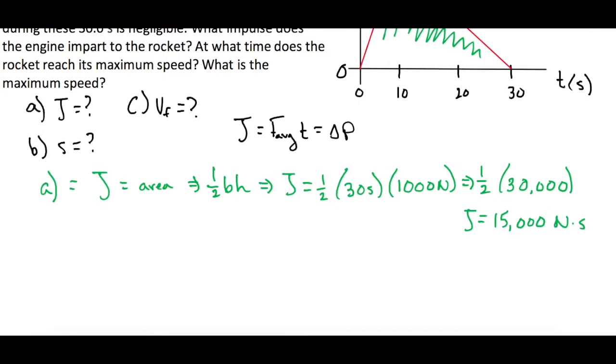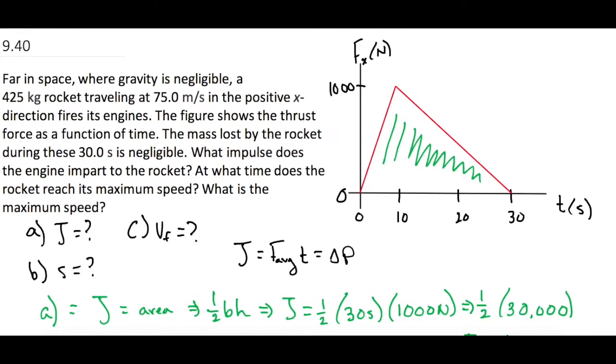Moving on to part B, at what time does the rocket reach its maximum speed?